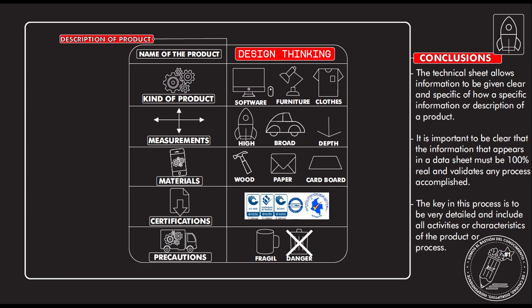As a conclusion, the technical sheet allows information to be given clearly and specifies how the information or the description of a product is presented. It is very important that the information appearing in the data sheet must be 100% real and validated. The key in the process is to be very detailed and include all the activities or characteristics of the product or the process. You cannot say something like this product has arsenic or poison without extremely accurate specification — especially if it is food, you have to be very cautious with that.